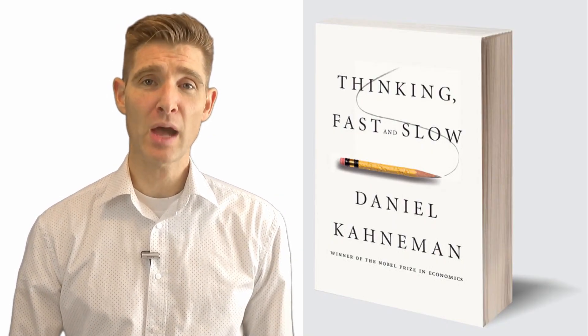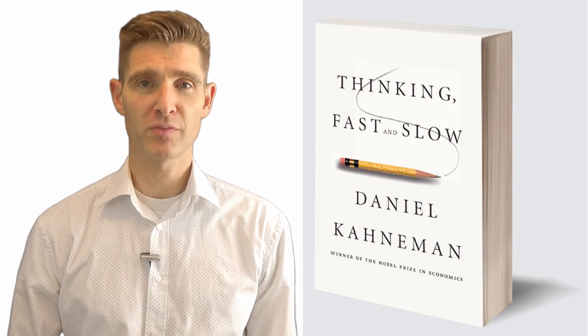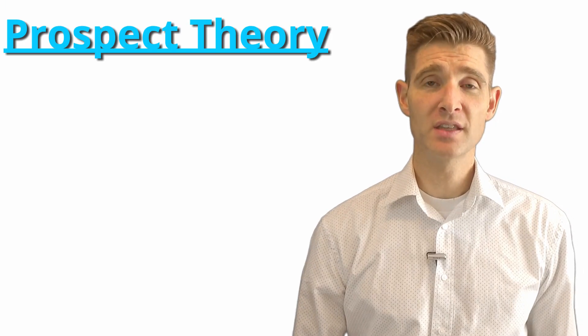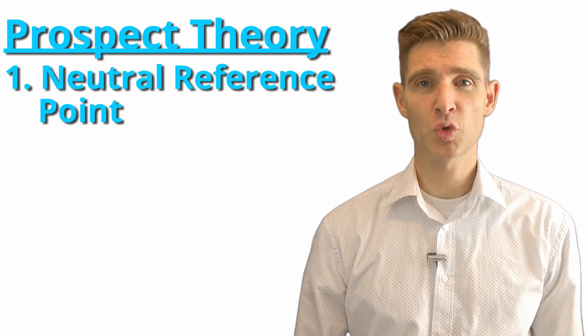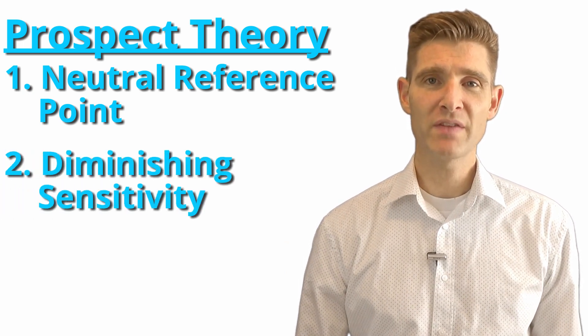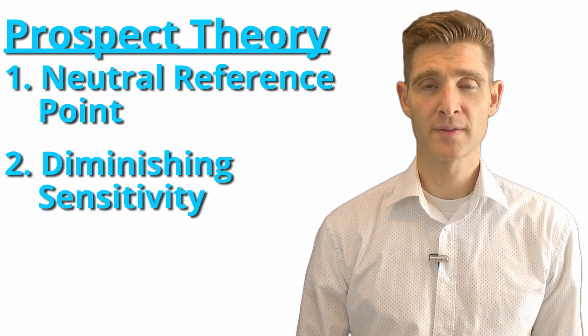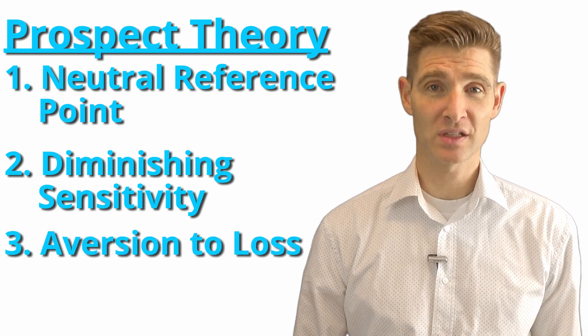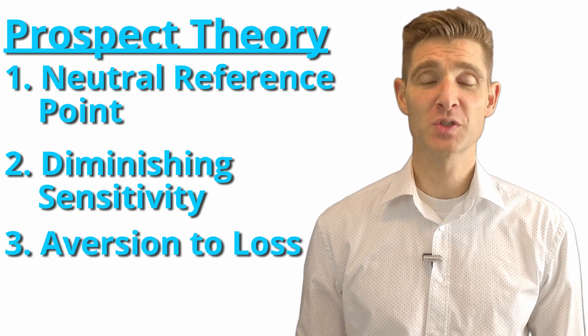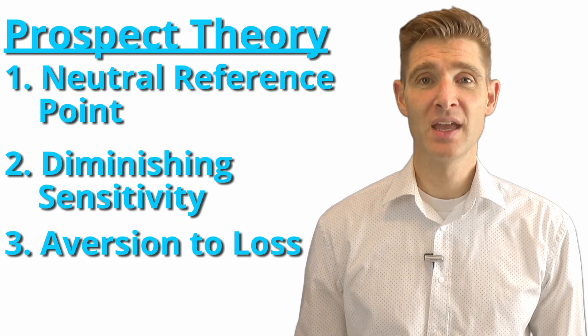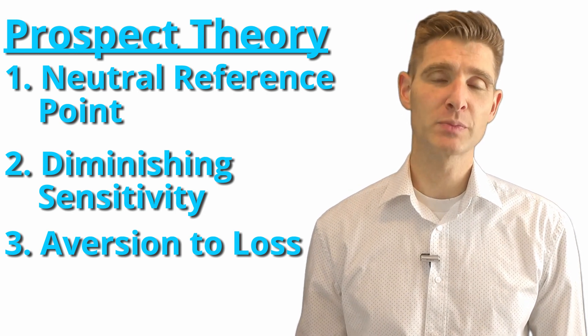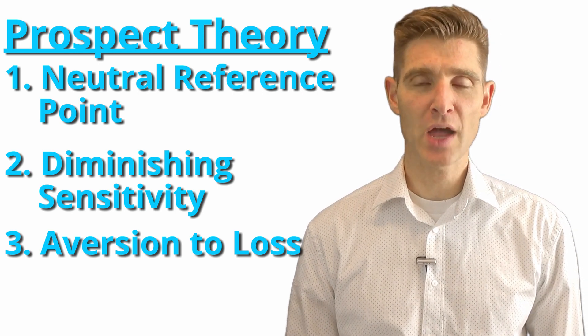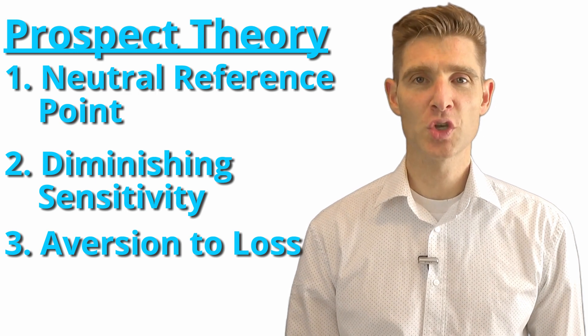In the book Thinking Fast and Slow, Daniel Kahneman outlines prospect theory and its three main parts. The first is that we evaluate things based on a neutral reference point. The second is that we have a diminishing sensitivity to changes. And the third is that most people have an aversion to loss. We won't talk too much about the first two points — the diminishing sensitivity and the neutral reference point.